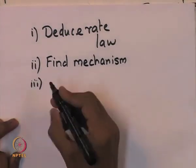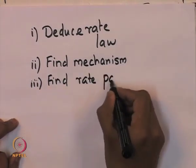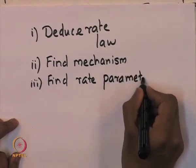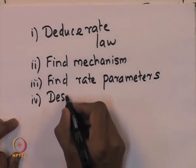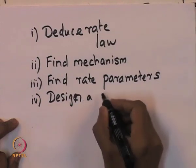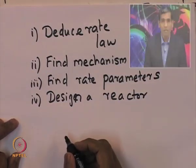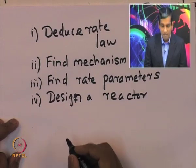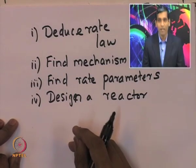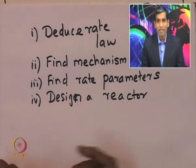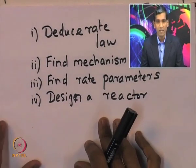For a particular example, we found the rate parameters. Then we initiated discussion on how to design a reactor. In particular, we considered the example of hydro-demethylation of toluene on a solid mineral catalyst containing a material called clinoptilolite, and we looked at the experimental data and tried to deduce the mechanism and estimate the rate parameters.